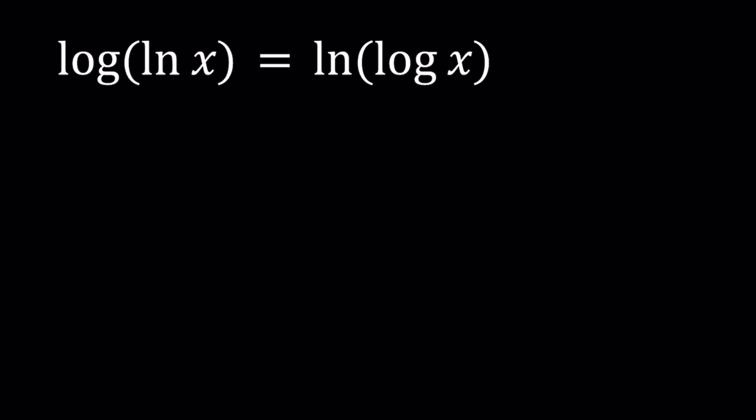So I'm going to set the whole thing equal to y, and don't ask y, you already know, right? So from here, we get the following. We get two equations, basically. Log ln x equals y, and this implies, since our base is 10 here, it's not written. This gives us ln x equals 10 to the power y.